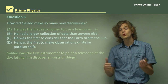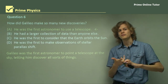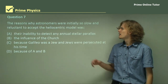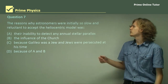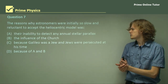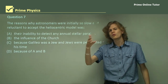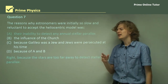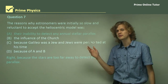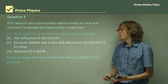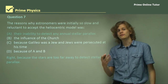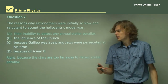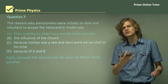He used the telescope to discover the moons of Jupiter, the phases of Venus, the stars in the Milky Way galaxy, and a couple of other things. Question 7: The reasons why astronomers were initially so slow and reluctant to accept the heliocentric model. One option says because of two of the other options, so we'll go through all of them. Option A: their inability to detect any stellar parallax, which should shift throughout the year. This seems a strong reason — people said that if the heliocentric model was right, we should observe some stellar parallax. Today we know the stars are too far away to really observe that. So A was one of the big reasons the heliocentric model wasn't accepted.